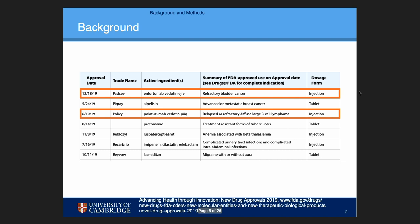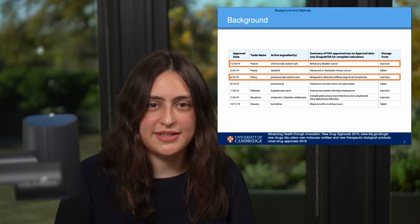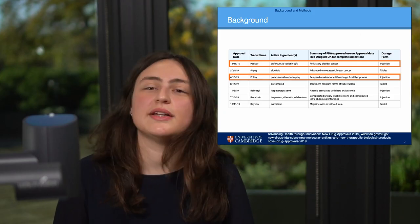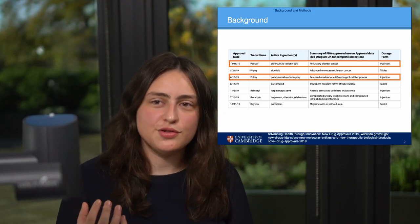I've highlighted two more here that are antibody drug conjugates — they are much more complicated and the molecules are much bigger than the ones on the previous slide. When you inject a drug, that drug obviously does not come as a tablet.